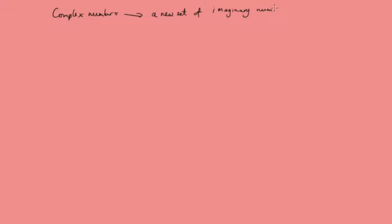Let's take a few steps back before we go into what the set of imaginary numbers is and how we define it, and do a little history of maths. In early history, people began to count because they wanted to count how many sheep or camels they had, and so the first numbers people had were natural numbers.